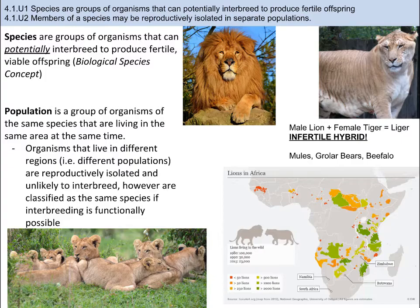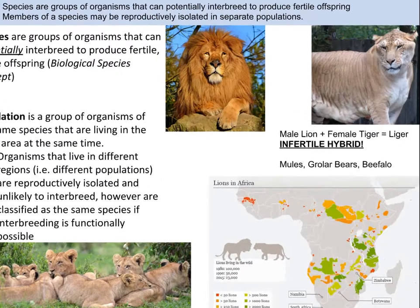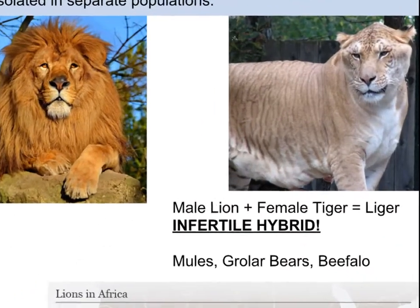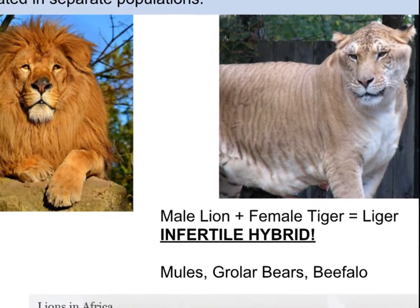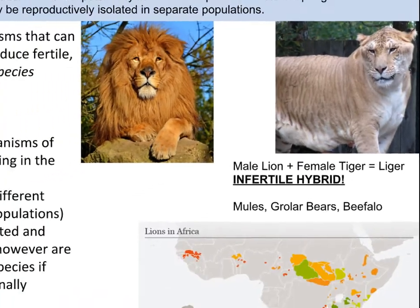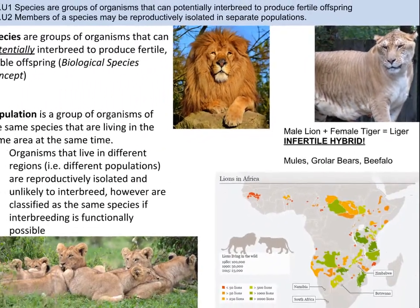Sometimes two distinct species are so closely related that they can reproduce and produce viable offspring, but not fertile offspring — these offspring are sterile. One example is when a male lion is mated, usually artificially, with a female tiger; the offspring is a hybrid known as a liger. It contains characteristics from both parents but cannot reproduce, so it's not its own species. Another well-known example is a horse and a donkey mating, producing a mule.